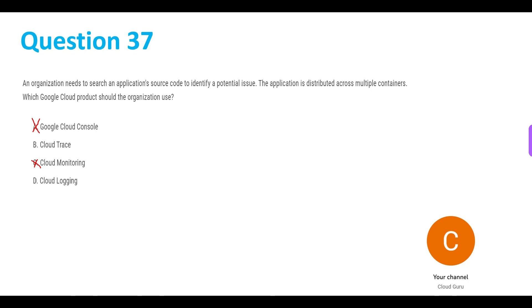Now let's go to D, which is Cloud Logging. Cloud Logging allows us to store, search, monitor, and alert on logging data and events from Google Cloud and Amazon Web Services. It is only logging-based — we don't need logging data; we just need the application source code. That is why D is not the answer. So we're left with B, Cloud Trace, which is the answer for question 37.